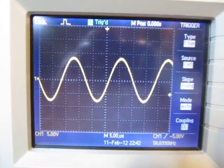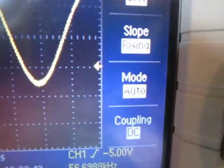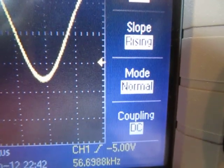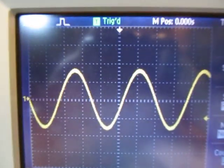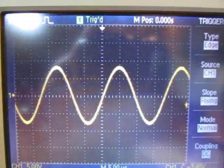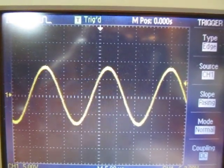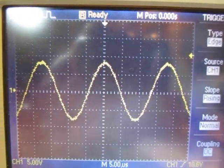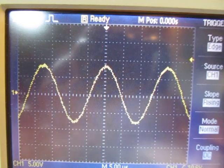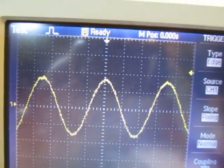And if I change the mode here from auto to normal. Now what will happen is as I move this trigger level up, you can see what happens. I'm not getting an update on the screen. What happens is the last triggered event is what's staying on the screen.